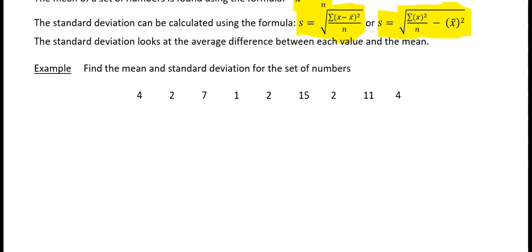OK, we're going to find the mean and standard deviation for the set of numbers. So we're going to use these random set of numbers, and we're going to use the second formula to do this. So we put in your x values, which are 4, 2, 7, 1, 2, 15, 2, 11, and 4.